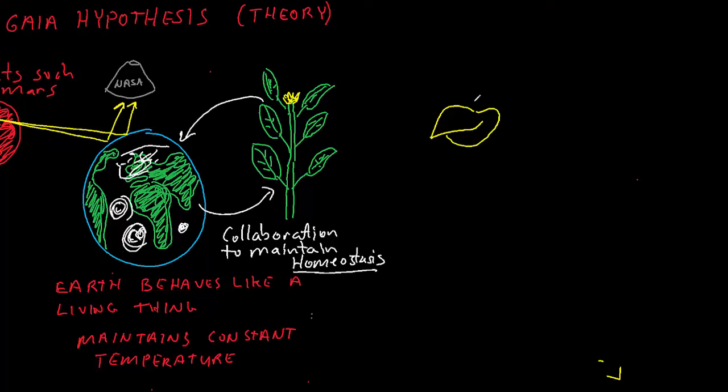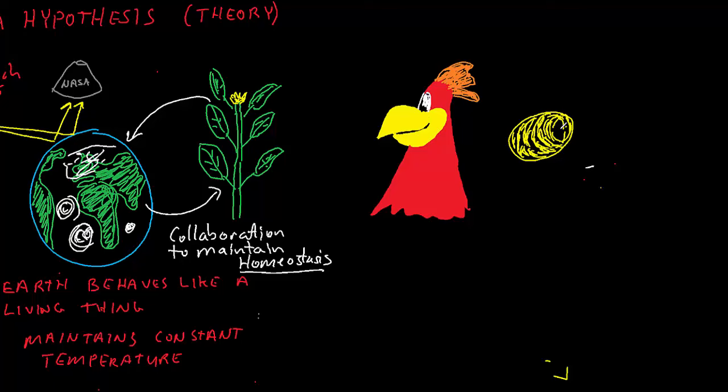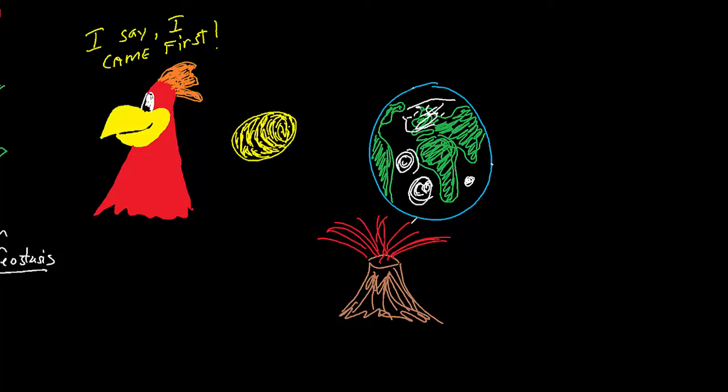This is kind of a chicken-and-egg question to some degree. The Earth was certainly here physically and geologically active before life, and the geology was very active early on. Volcanoes were erupting, meteors were striking the surface and putting gases and dust into the atmosphere, and this certainly had an effect on the composition of the atmosphere.